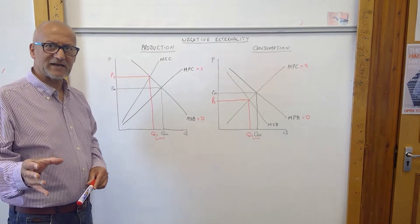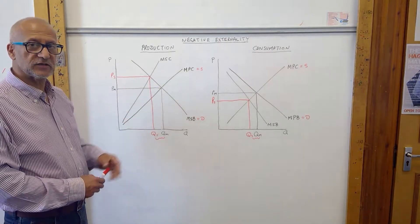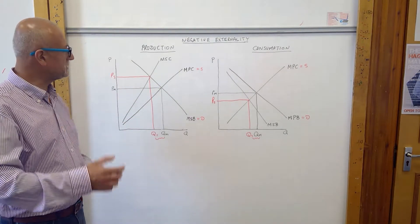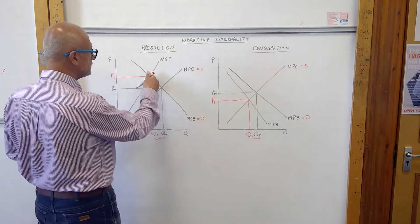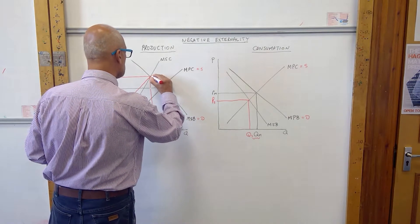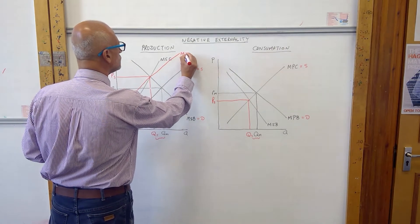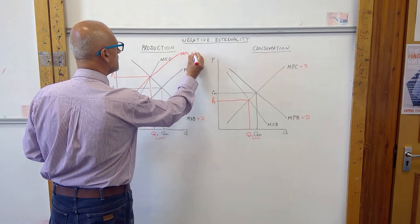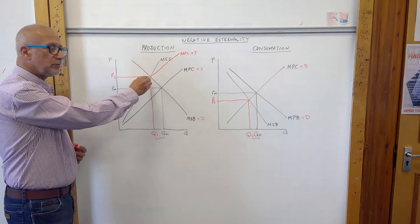So if we impose the right amount of tax, hopefully we can get the supply curve to shift to the left to the point where it intersects with the marginal social cost. So we get this shifting to the left, like so.